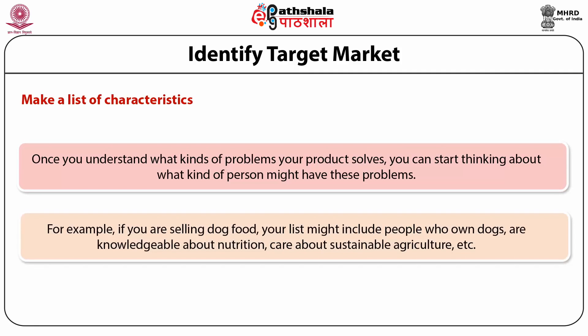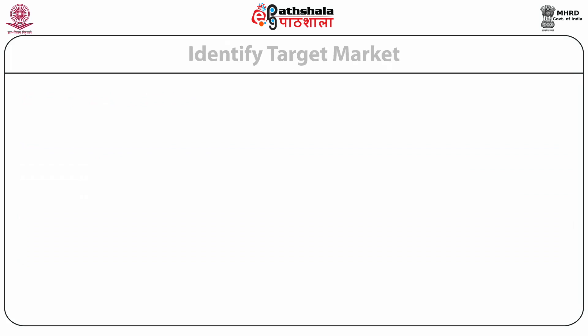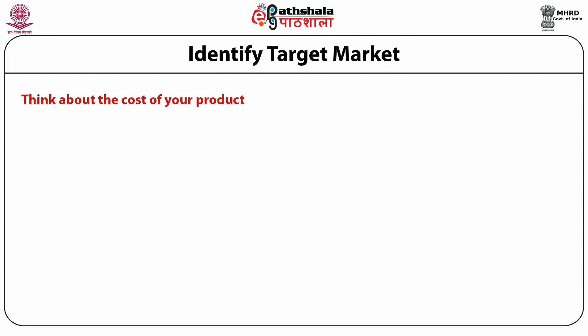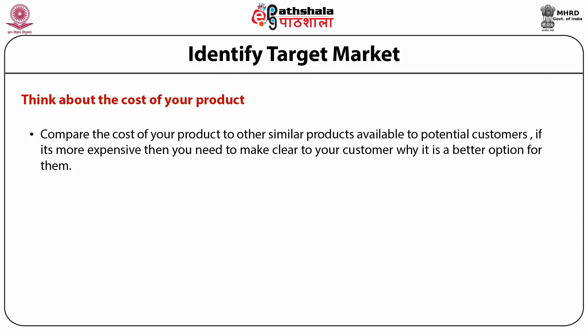For example, if you are selling dog food, your list might include people who own dogs, are knowledgeable about nutrition, and care about sustainable agriculture. Think about the cost of your product and compare it to similar products available to potential customers. If your product is more expensive, you need to make it clear to your customer why it is a better option. You also need to think about whether your customers consider your product a necessity or a luxury item.